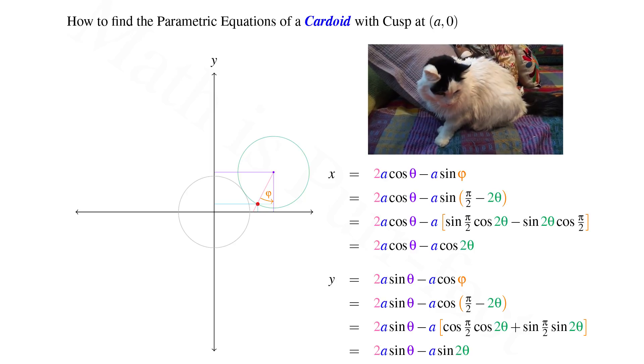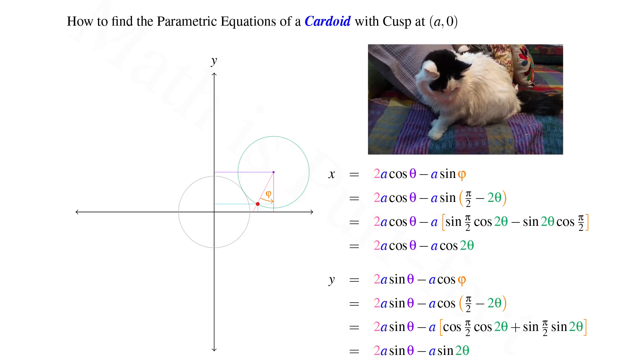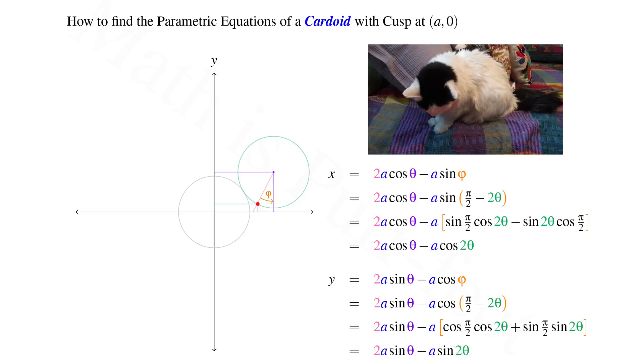Hence, the y coordinate of our cardioid, solely in terms of the parameter theta, reduces to 2a sin theta minus a sin of 2 theta.